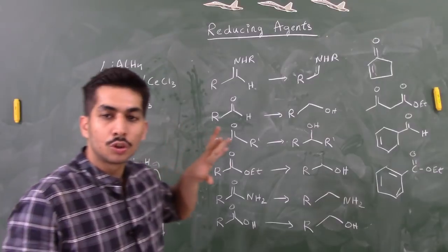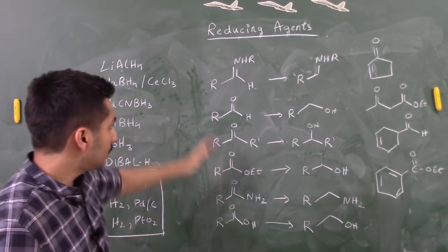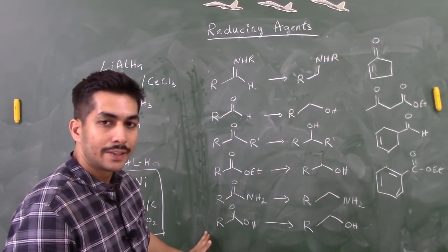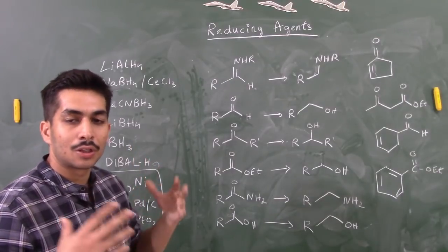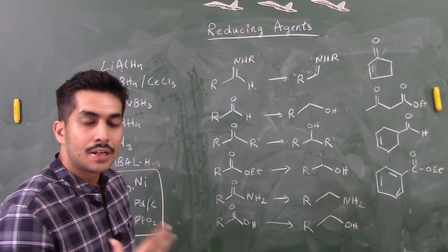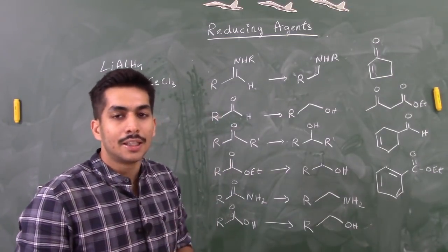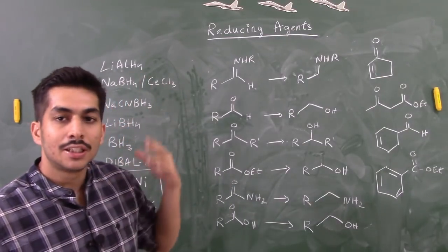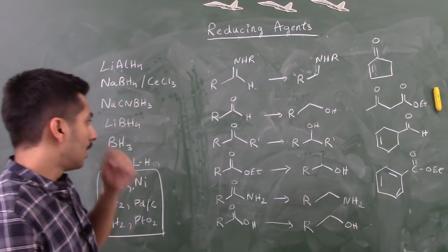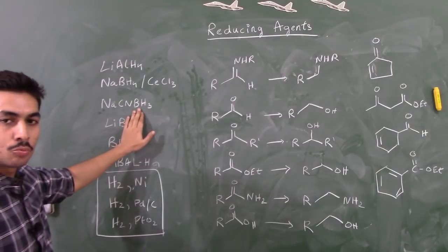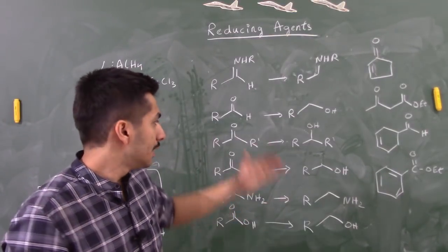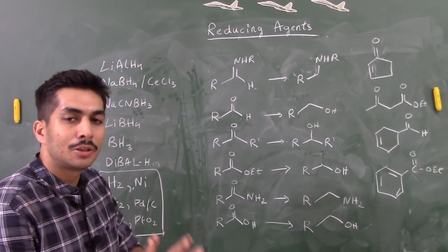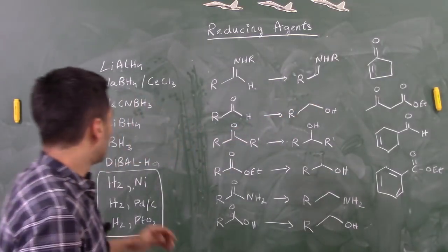Sodium cyanoborohydride is a very mild reducing agent. Out of all the functional groups listed, it is only able to easily reduce imines. It cannot reduce ketones, esters, amides, or carboxylic acids. This makes it a highly chemoselective reagent — if a substrate has a ketone, an ester, and an imine, and you only want the imine reduced, use sodium cyanoborohydride. It can reduce aldehydes, but very slowly, so for practical purposes it is considered selective only for imines.